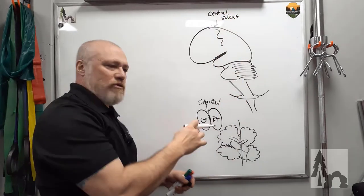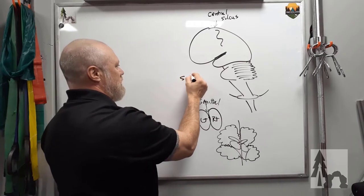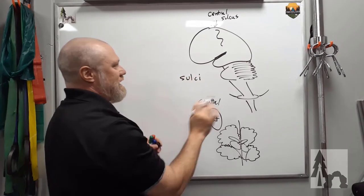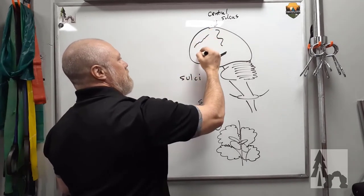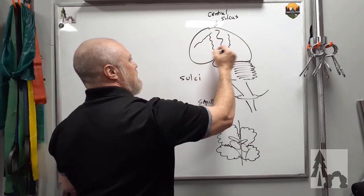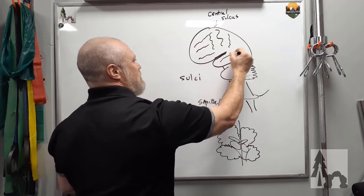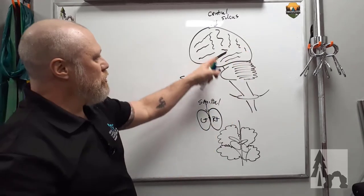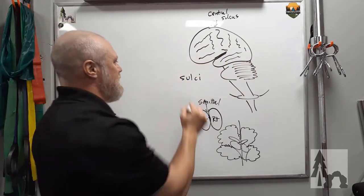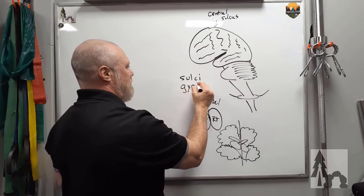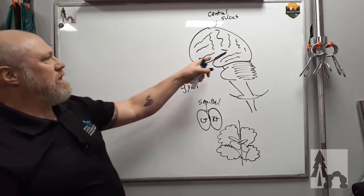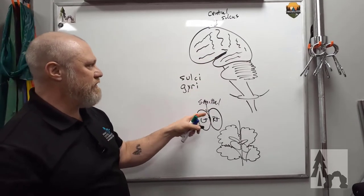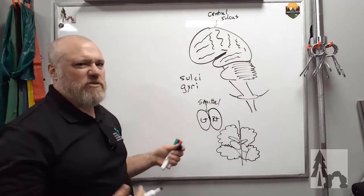So those cuts or grooves are called sulci and then the little folds, you've probably seen this in a brain like a picture somewhere before, it's all wrinkly. Those little grooves that are formed by the sulci are called gyri. Larger sulci like the lateral fissure or the sagittal fissure, the fissure is just a big sulcus.